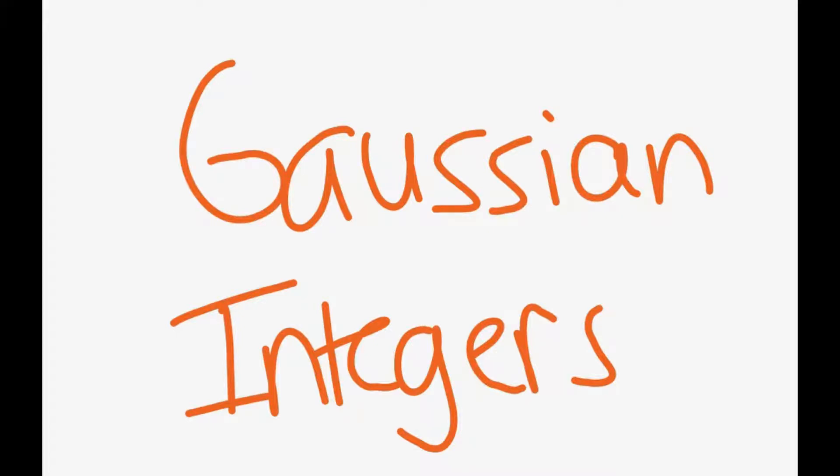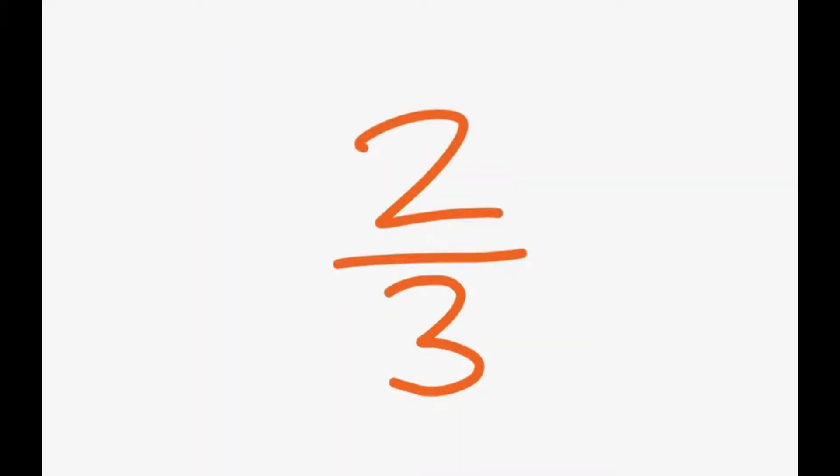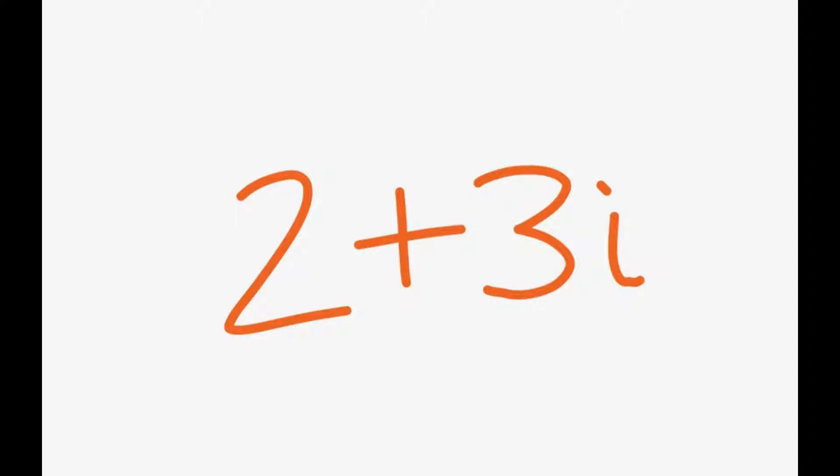There are many different groups of numbers. Integers, rational numbers, and complex numbers are examples of the commonly known groups of numbers. However, not many people know about the Gaussian integers.